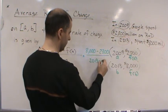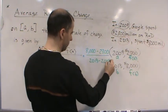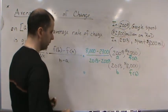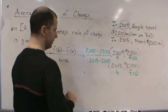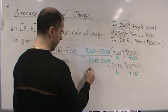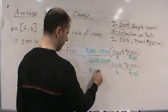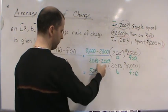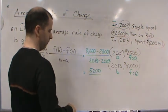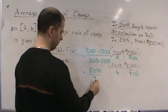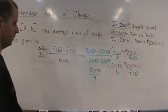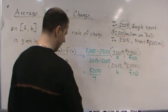If I subtract, I get 5200, divided by 4 years.